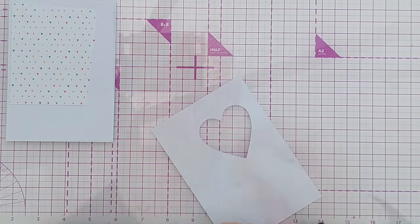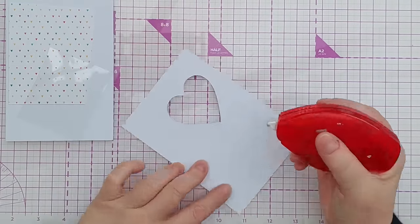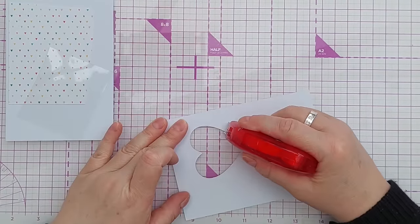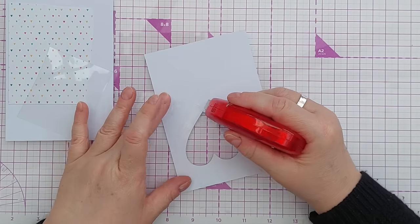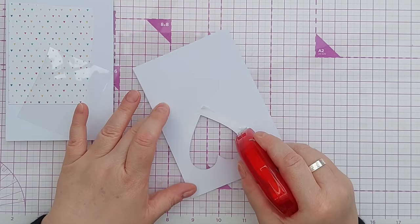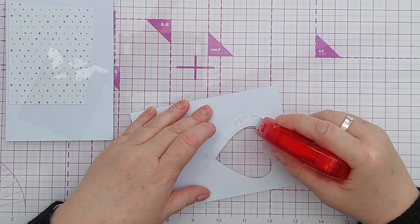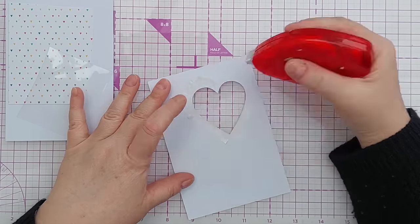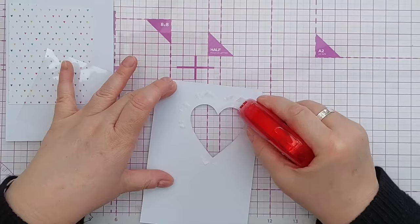Now I want to create the shaker element. I've got a little piece of acetate here that I'm going to use as the front window of my shaker and I'm going to run this tape runner around the edge and that will hold my acetate in place.